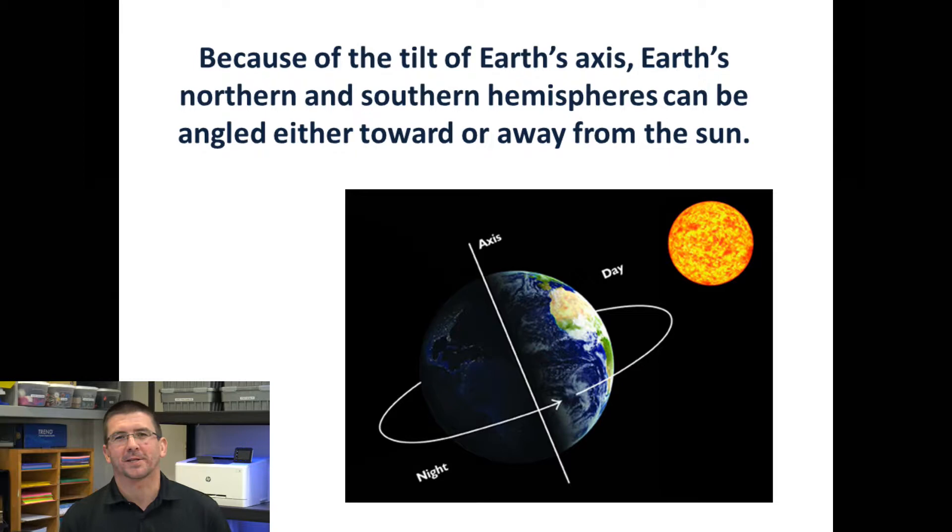Now, as we talked about in the last lesson, Earth's axis doesn't sit directly up and down in relation to the Sun, it's actually tilted, which means that one hemisphere, whether it be the northern hemisphere or the southern hemisphere, will be receiving more sunlight than the other.